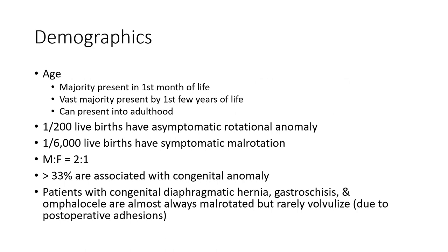Demographics: the majority present in the first months of life, with the majority presenting by the first few years of life. Can present at any age. 1 in 200 live births have an asymptomatic rotational anomaly, and 1 in 6,000 live births have symptomatic malrotation. More prominent in males.